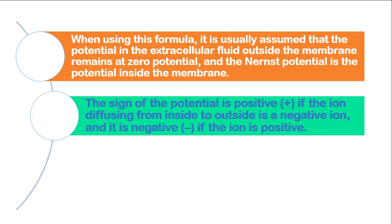The sign of the potential is positive if the ion diffusing from inside to outside is a negative ion, and it is negative if the ion is positive.